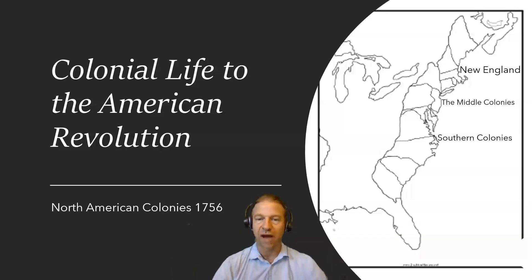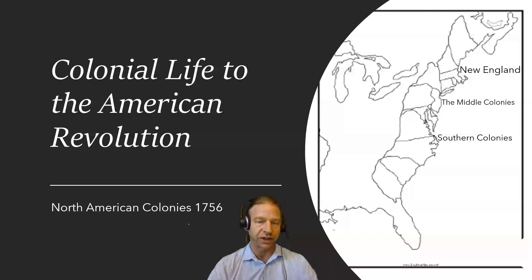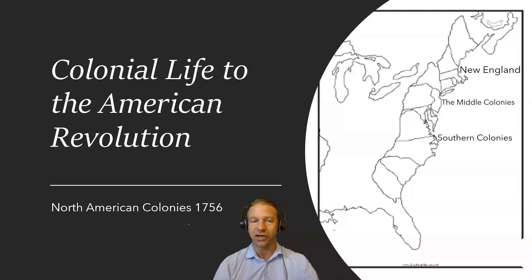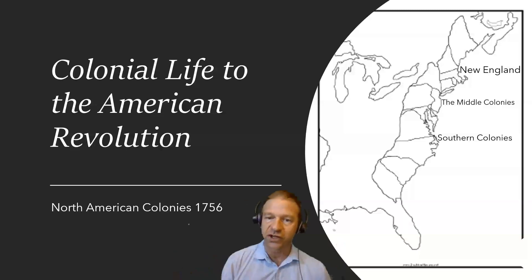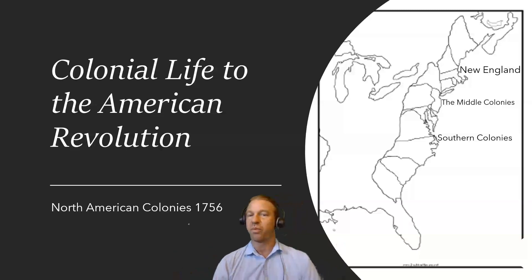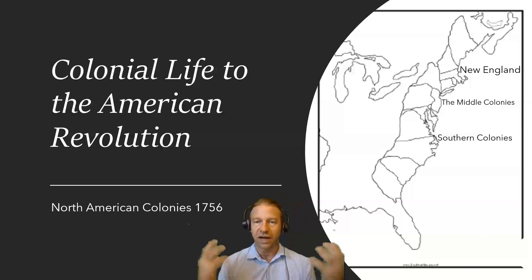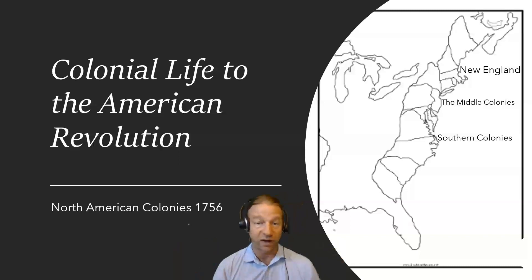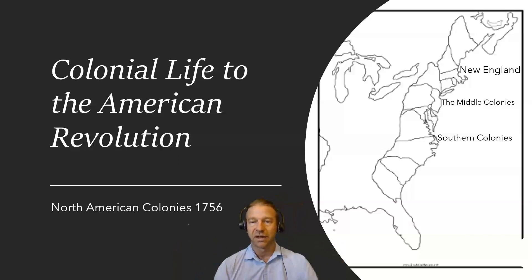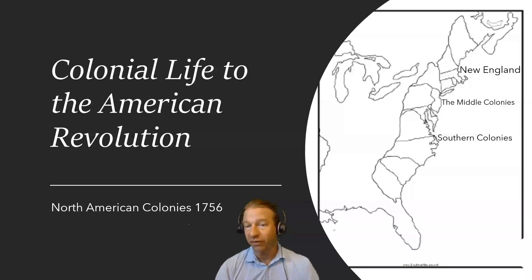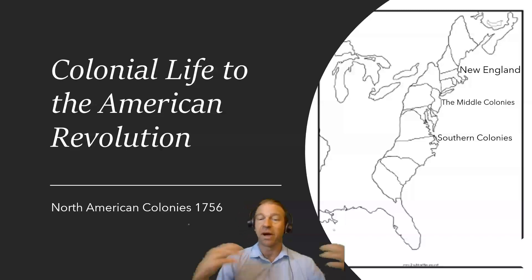With the ratification of the American Constitution following the failure of the Articles of Confederation, many Virginians were very prominent in the creation of things like the Bill of Rights, associated with James Madison. George Mason, the author of the Virginia Bill of Rights, served as a model for that.